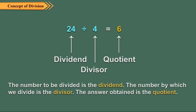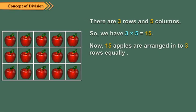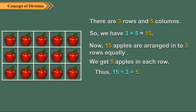Children, you know division is the inverse of multiplication. But how? Let us explain it. Here, 15 apples are arranged into three rows equally. We get five apples in each row. Thus, 15 divided by 3 is equal to 5.